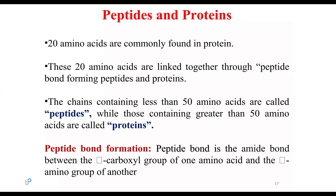The next thing we are going to look at is peptide bond formation. Peptide bonds are formed between the carboxyl group of one amino acid and the amino group of another amino acid. The bond that exists between these two different functional groups is what you call a peptide bond.